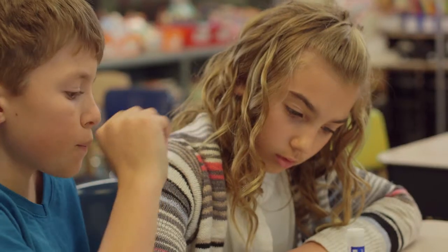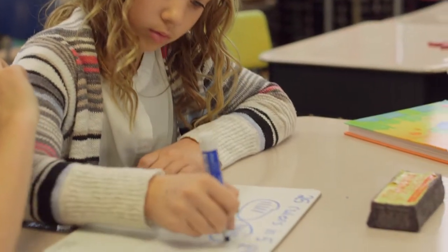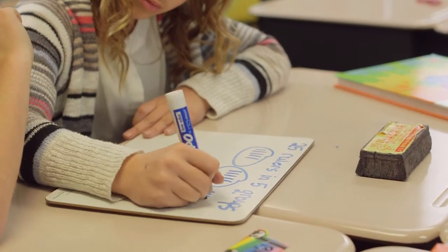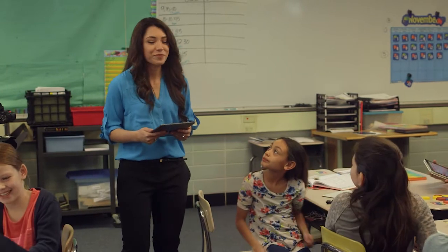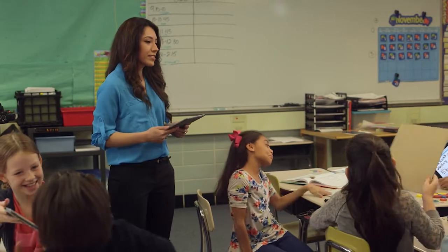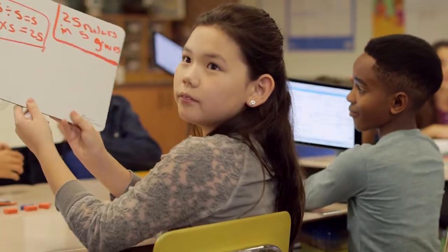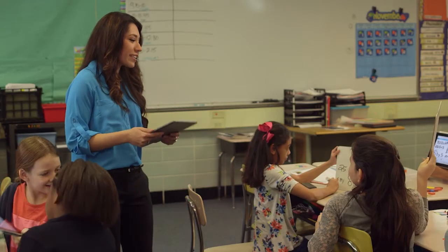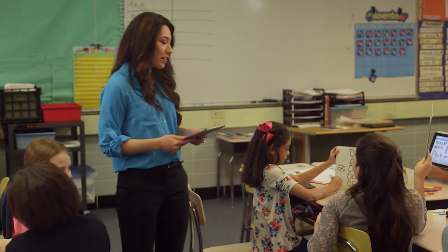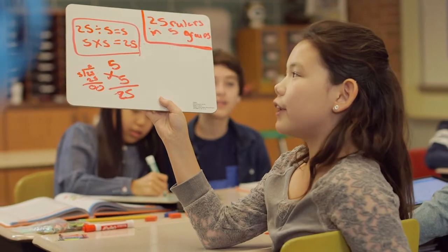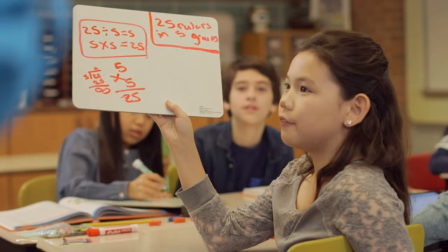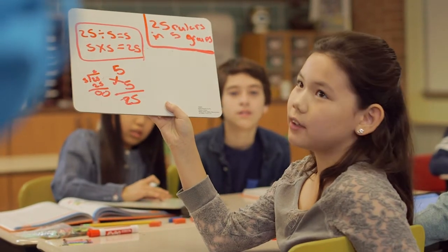Let's see how they did. Everyone eyes on me — hold up their answers. Great, looks like you all did great work! Beth, can you tell me how you got your answer? Well, right here I did an array, and then I know that 25 rulers are in five groups because 25 divided by 5 is 5, and 5 times 5 is 25.